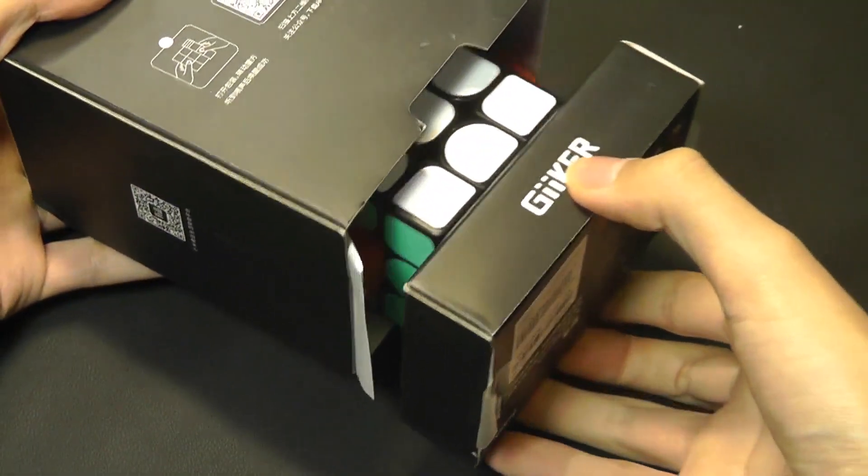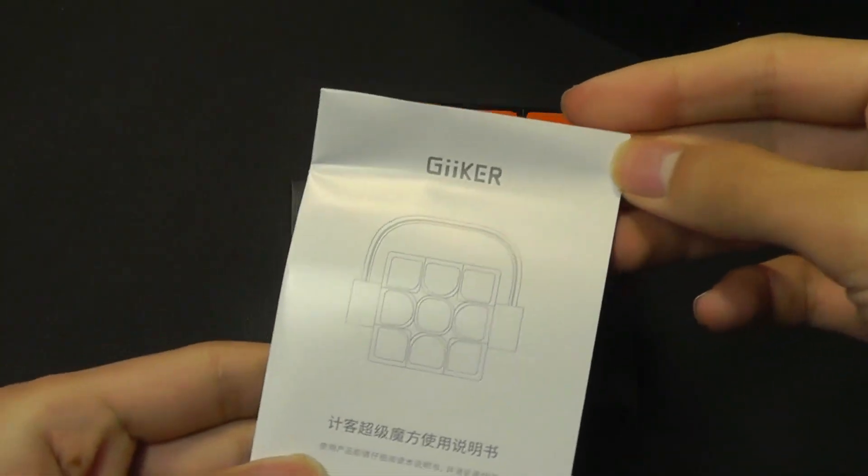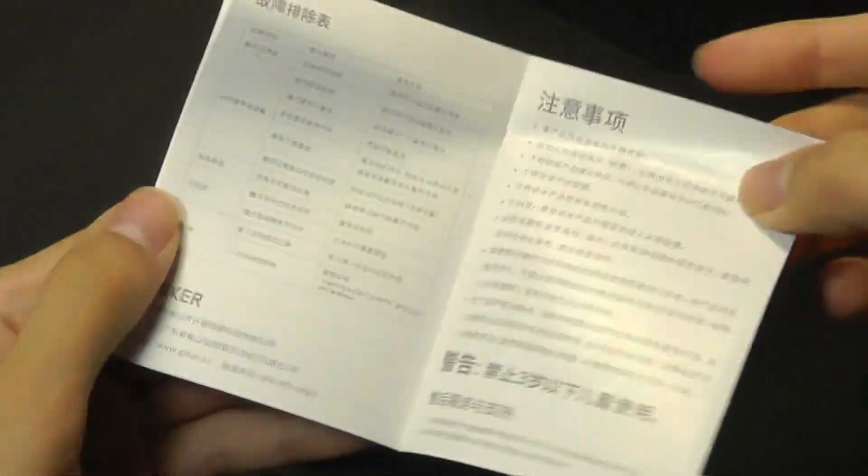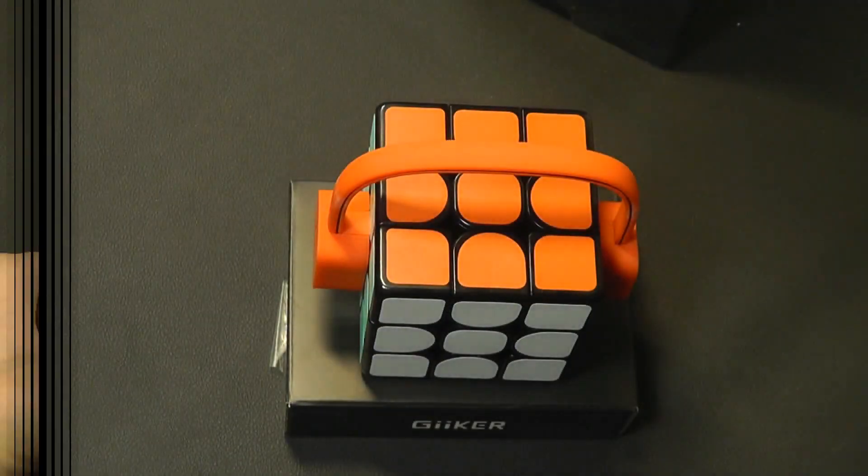Peeling back the tape here, we can just open up the box like so, and we have just a quick user guide on top. It's still printed in Chinese, but it should be simple enough to understand. The app itself does have an English interface that you can choose.